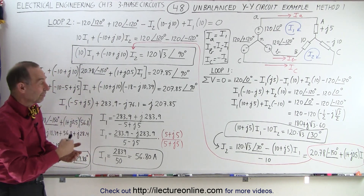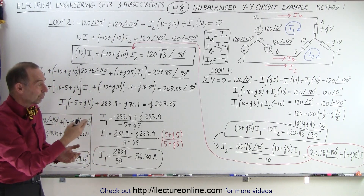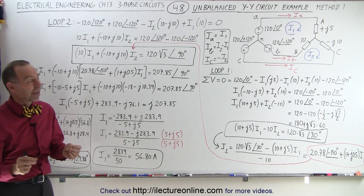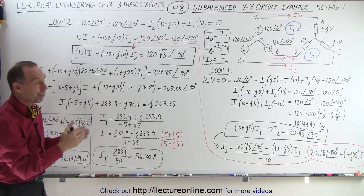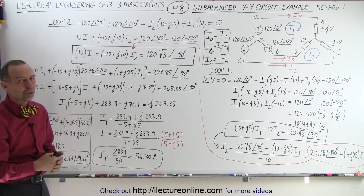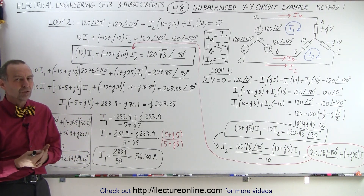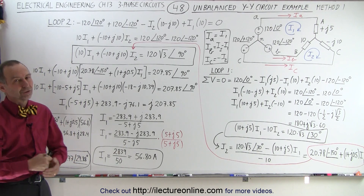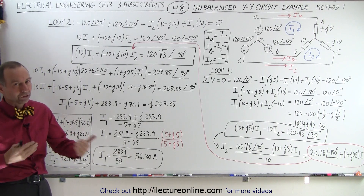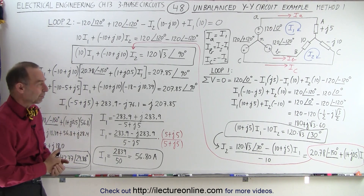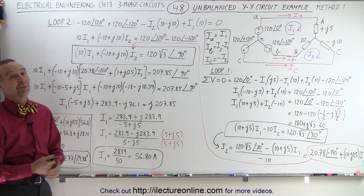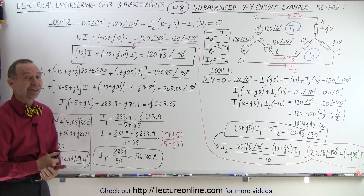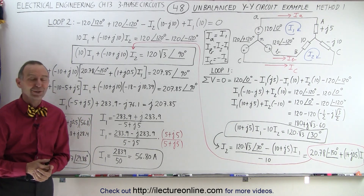And that's how you find the three line currents using this method — basically solving one variable in terms of the other and substituting. On the next example, we'll do the same problem but use determinants to calculate the values for I1 and I2, so you can see the two different approaches and pick the one you prefer.